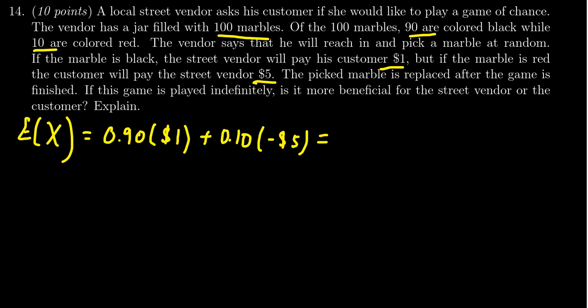Well, let's compute the expected value. That's what we want to figure out here. So you're going to end up with 0.90 times $1, so that's going to give you 90 cents. And then for the next one, you're going to get 0.10 times -$5, so that ends up with negative 50 cents.